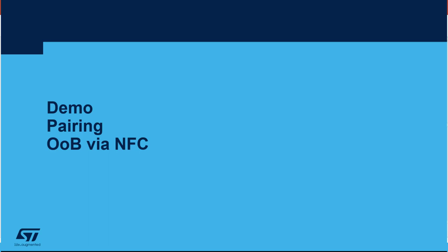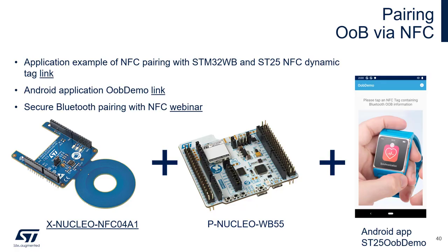This is a demonstration of pairing over NFC. ST offers a user application example of Bluetooth pairing over NFC. The application runs on STM32WB5 Nucleo together with an NFC shield that integrates an ST25 dynamic tag. The second part is an Android application, also provided in source code. You can find both of these resources in the links in the presentation.